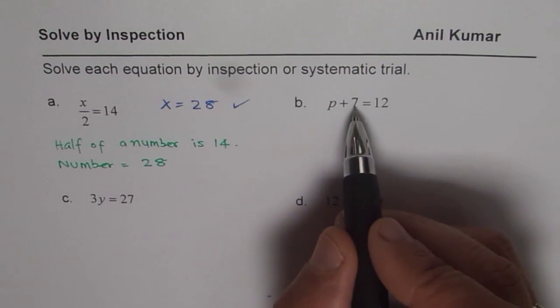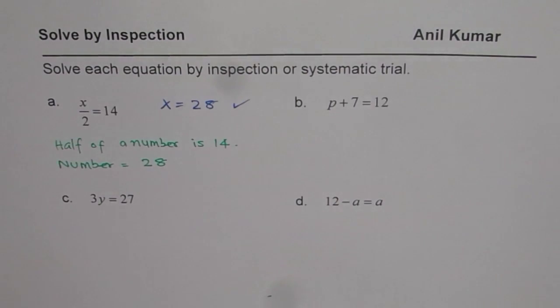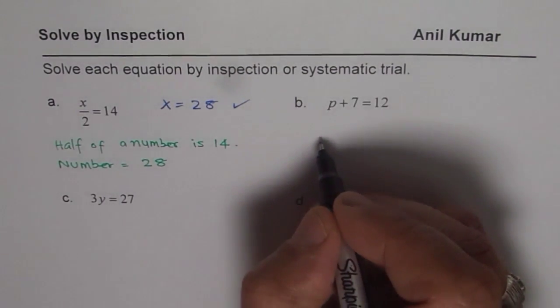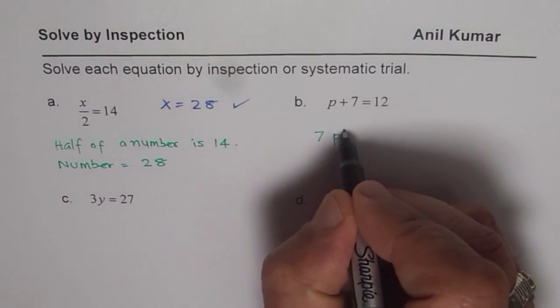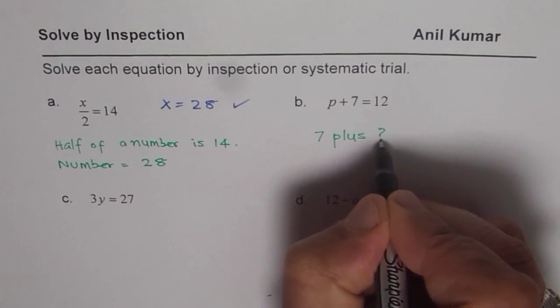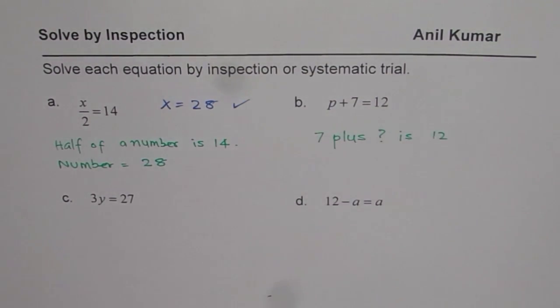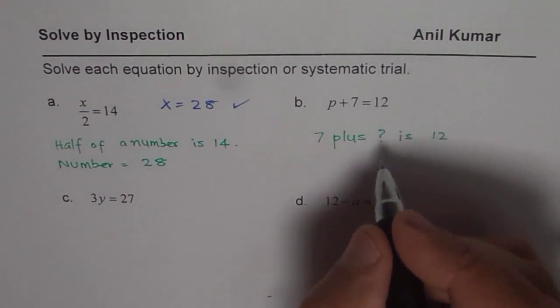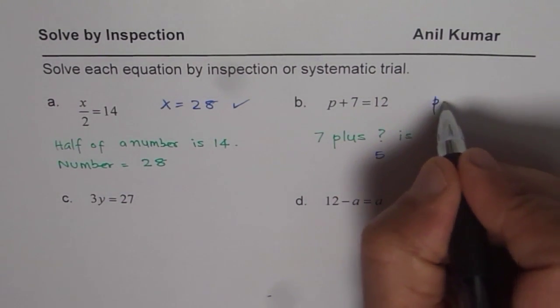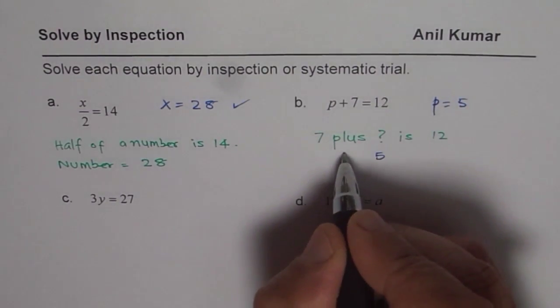Or 7 plus what is 12? So here the equation could be 7 plus what is 12. So 7 plus 5. So we know 7 plus 5 is 12, so p equals 5 and you can work it out.